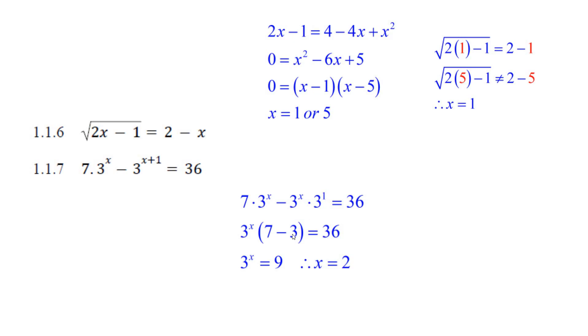Oh, look at this. 7 minus 3 is 4. Divide both sides. Now we get 3 to the x equals 9. And I don't have to even write it out. I know that 3 squared is 9. So x must equal 2. And there you go.